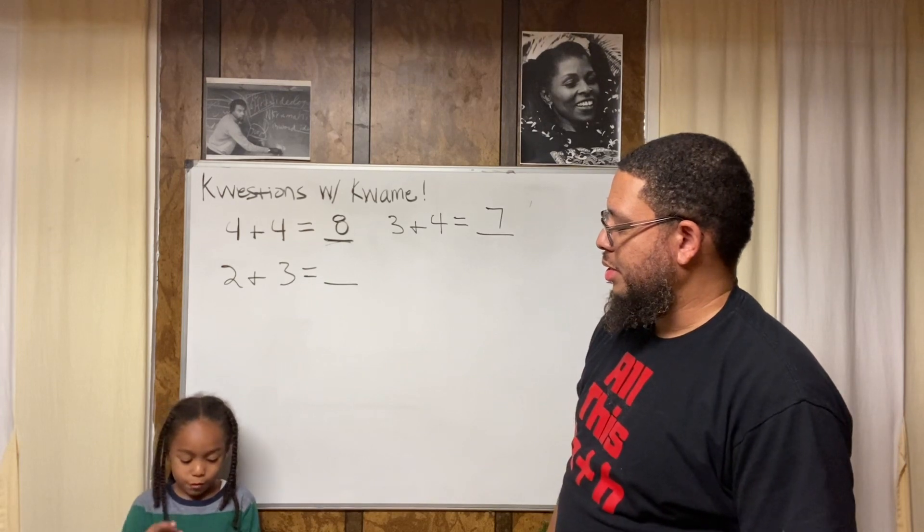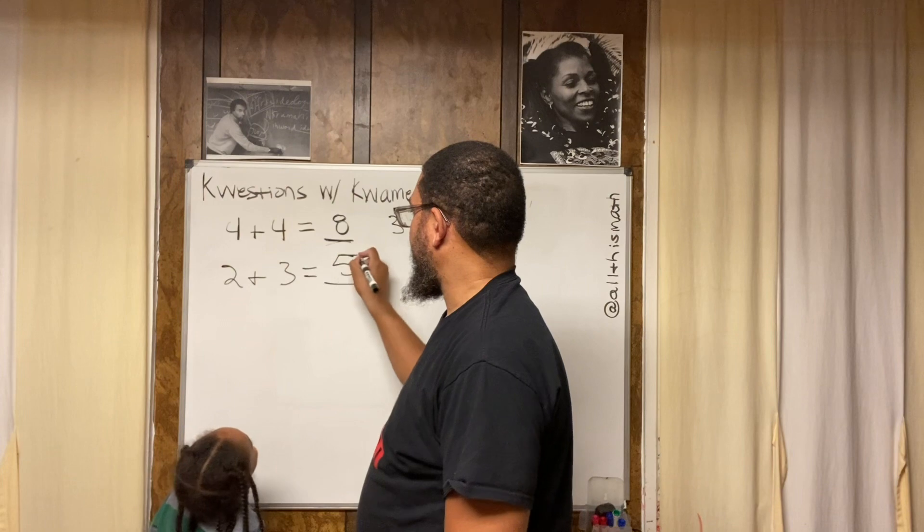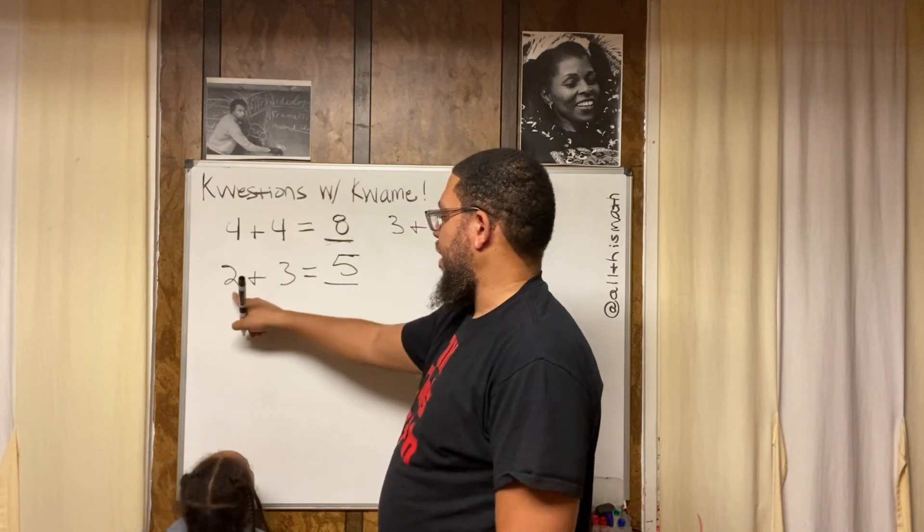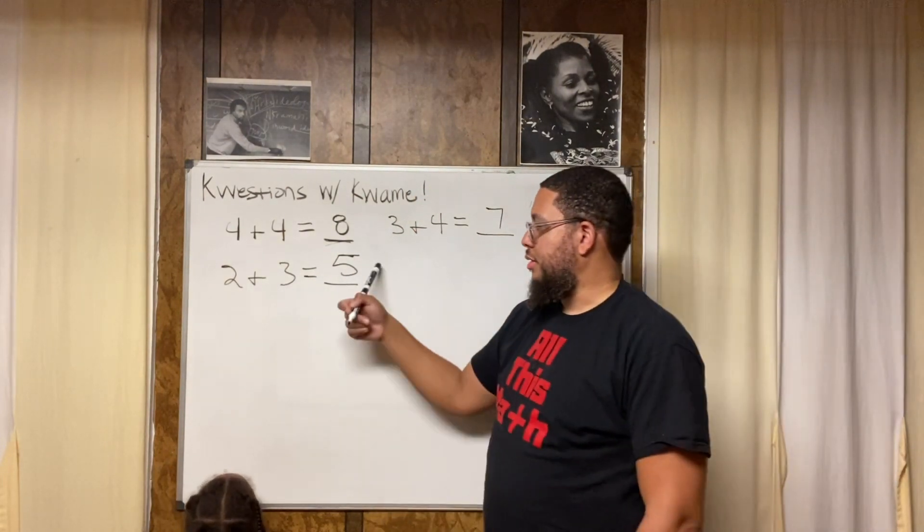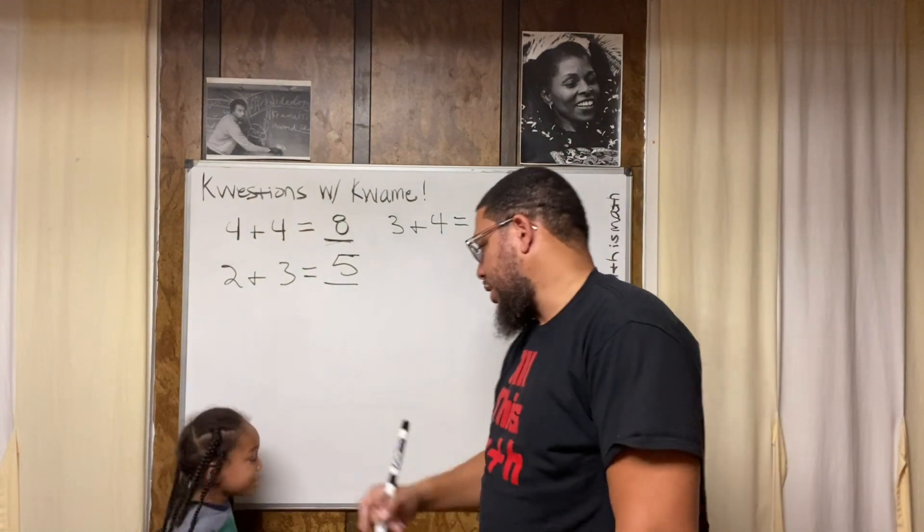Two plus three. Alright, two plus three equals one, two, three, four, five. Five! Five, five! So the sum is five. So two and three are the addends and the sum of two and three is five. Alright, what's another question you got?